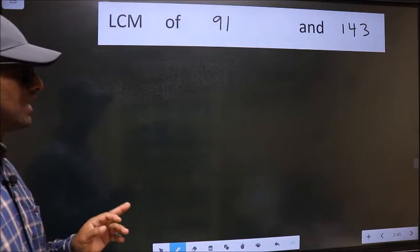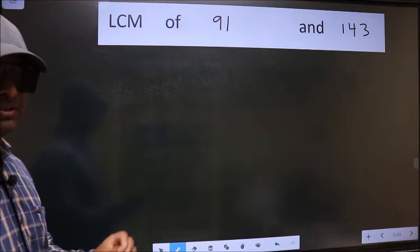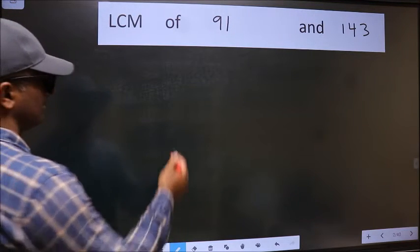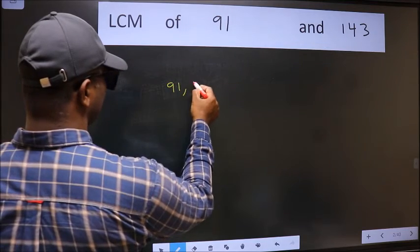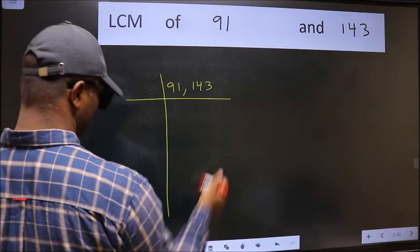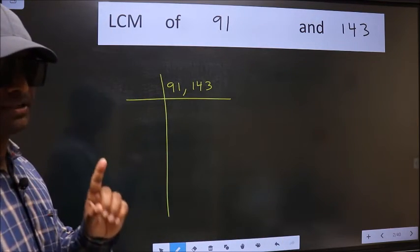LCM of 91 and 143. To find the LCM, we should frame it in this way: 91, 143. This is your step 1.